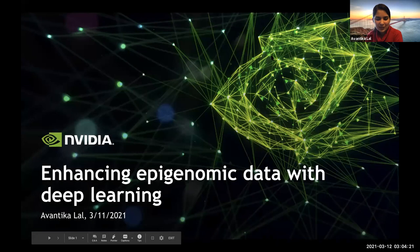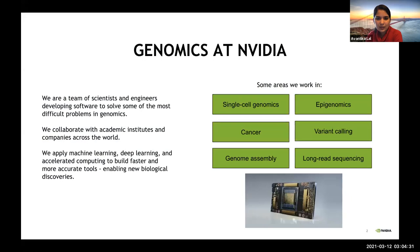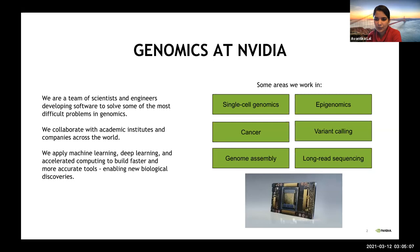ATAC-seq sequences DNA and produces short reads or fragments of DNA sequence that we align to the genome. When aligned, we get a coverage track across the genome reflecting where chromatin is accessible. Today I'll walk you through how deep learning can be used to enhance and denoise ATAC-seq data.